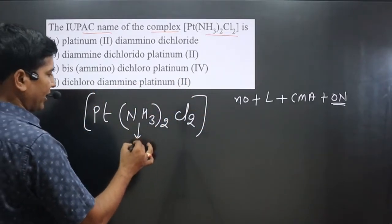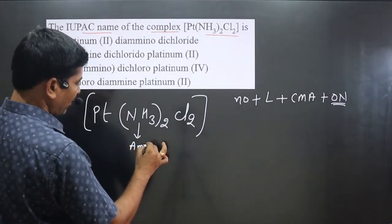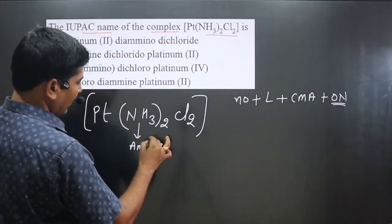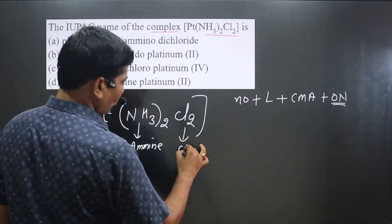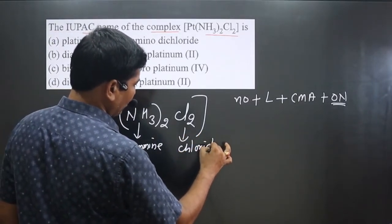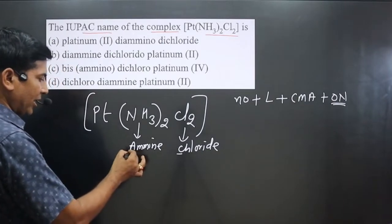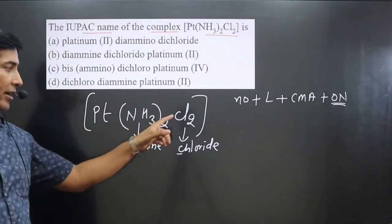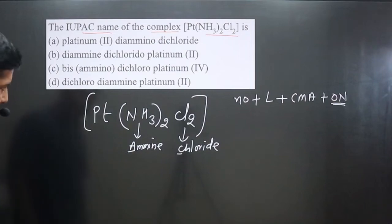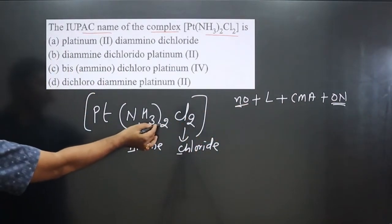Since more than one type of ligand is present, we write them in alphabetical order. We have the ammonia ligand — a neutral ligand — named 'ammine,' starting with 'a.' Then we have the chloride ligand, written as 'chlorido,' starting with 'c.' So ammine comes first, then chlorido.